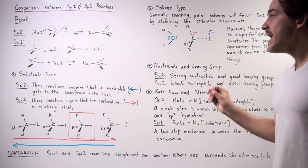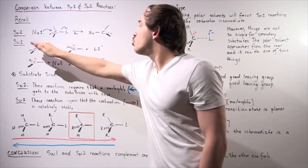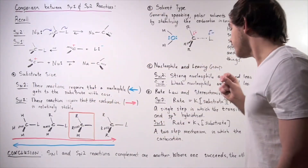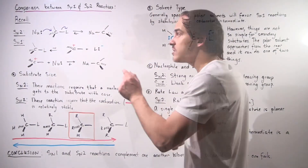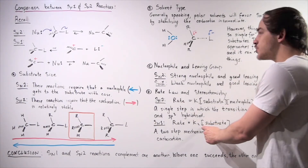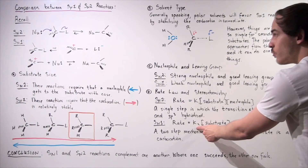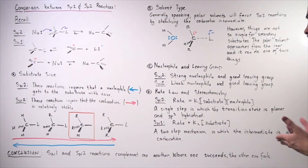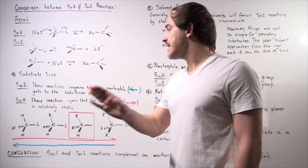For the SN1 reaction, we have two different steps. The first step is the ionization step — the rate-determining step. The second step is the product-determining step — the quick step. Because only the substrate appears in the rate-determining step, the rate law strictly depends only on concentration of substrate: rate = k2 × [substrate]. It does not depend on the concentration of nucleophile. So increasing nucleophile concentration will not change the rate of reaction.